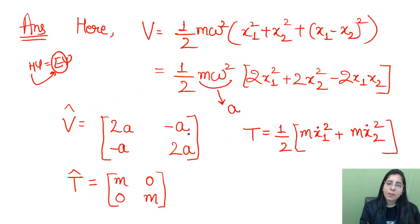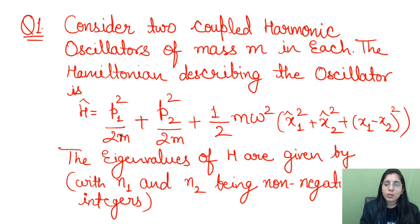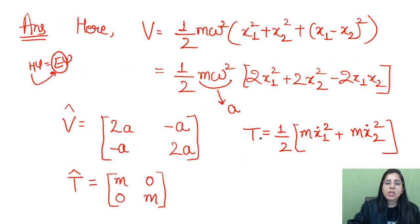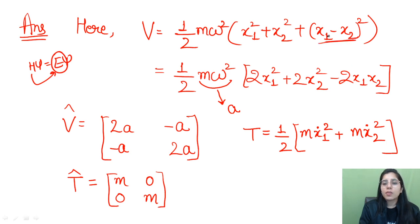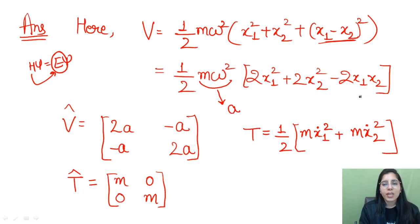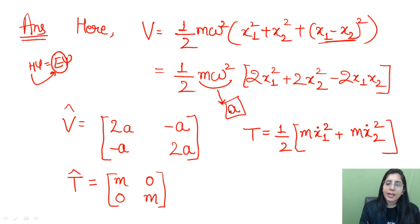Now I'm going to simplify the potential energy using the (A minus B) squared formula, which gives A squared plus B squared minus 2AB. X1 squared plus X1 squared gives 2X1 squared. X2 squared plus X2 squared gives 2X2 squared. Then minus 2X1 X2. Instead of writing M omega squared every time, I'm considering it as a constant A in place of M omega squared. I'll put the value back at the end. Now we will write the matrix for the potential energy.